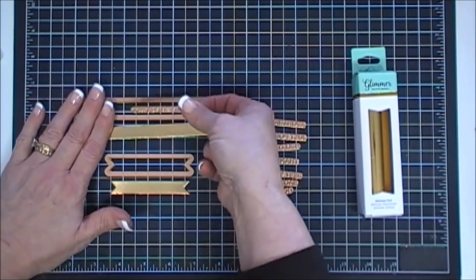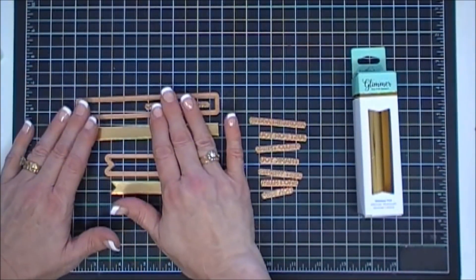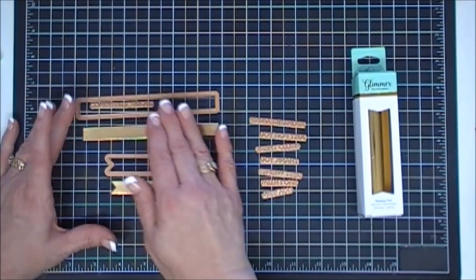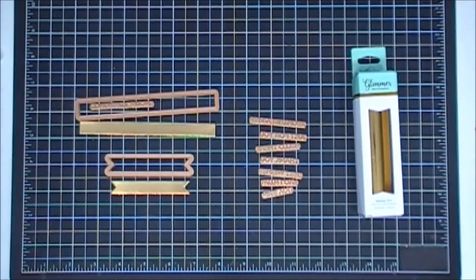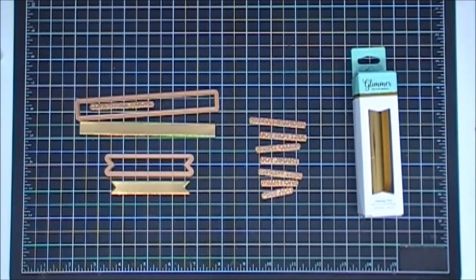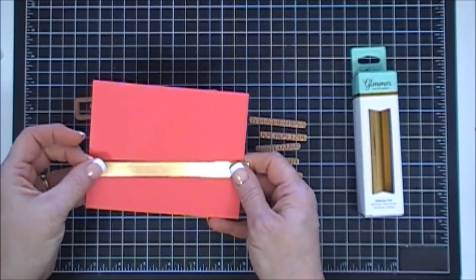The largest is the congratulations and it fits in both banners perfectly. So all of them will fit in both of these banners and you can shift them left to right to customize your cards. I'm slowly building a collection of glimmer plates and it's nice to do stamping.